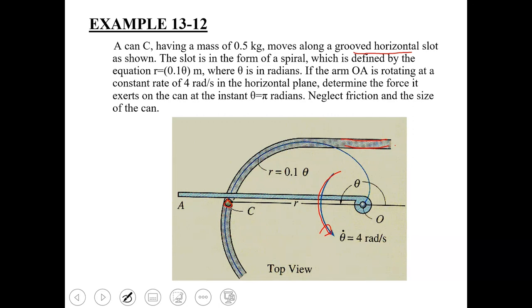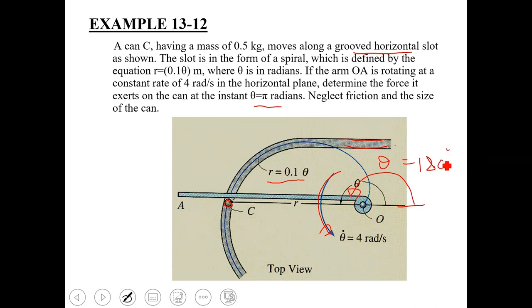The arm rotates at four radians per second, pushing the can within the slot. The function for this slot is given as r = 0.1θ, where θ is in radians — a spiral. You need to determine the force which this arm exerts on the can at the instant when θ = π radians, which is 180 degrees.